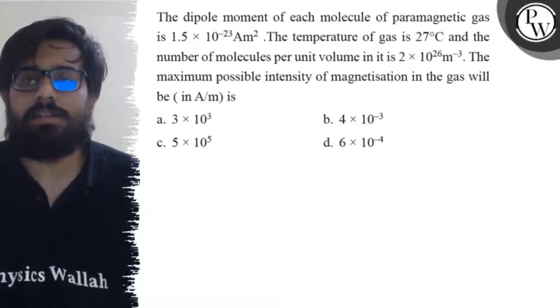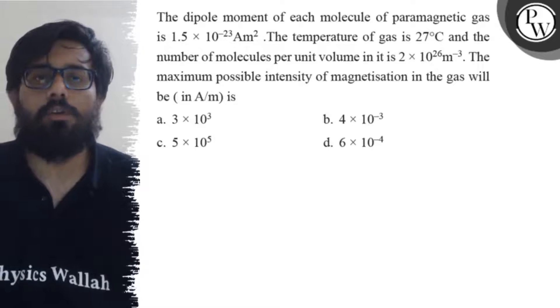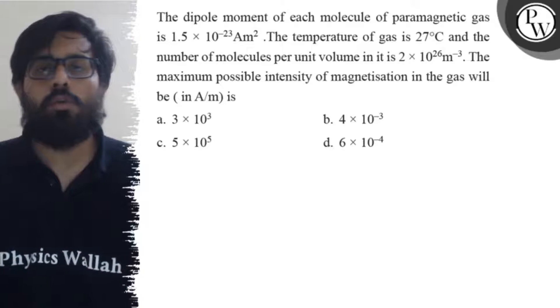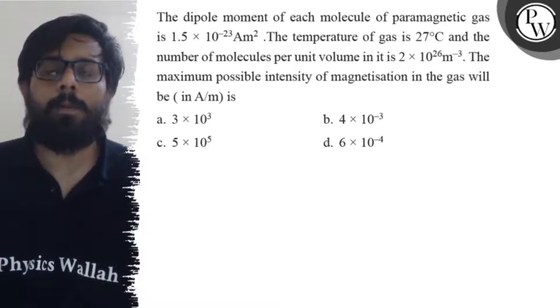The temperature of the gas is 27 degrees Celsius and the number of molecules per unit volume is 2 × 10^26 per meter cube.